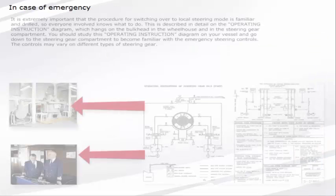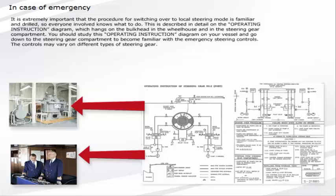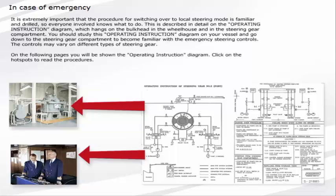It is extremely important that the procedure for switching over to local steering mode is familiar and drilled so everyone involved knows what to do. This is described in detail on the operating instruction diagram which hangs on the bulkhead in the wheelhouse and in the steering gear compartment. You should study this operating instruction diagram on your vessel and go down to the steering gear compartment to become familiar with the emergency steering controls. The controls may vary on different types of steering gear. On the following pages you will be shown the operating instruction diagram. Click on the hot spots to read the procedures.